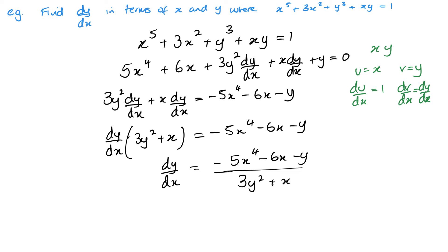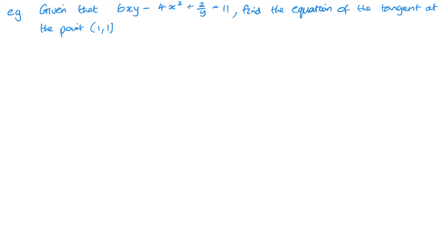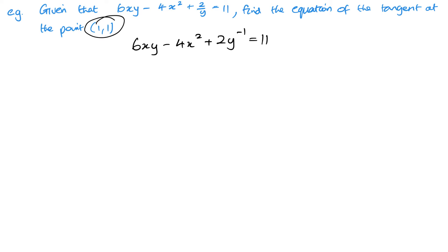Hopefully that wasn't too difficult. Let's have a look at another example. In this example, we need to find an equation of a tangent, which means we need to find the gradient at this point. First, I want to write down my equation, taking the y up onto the top line, and then differentiate implicitly. Starting with my 6xy.